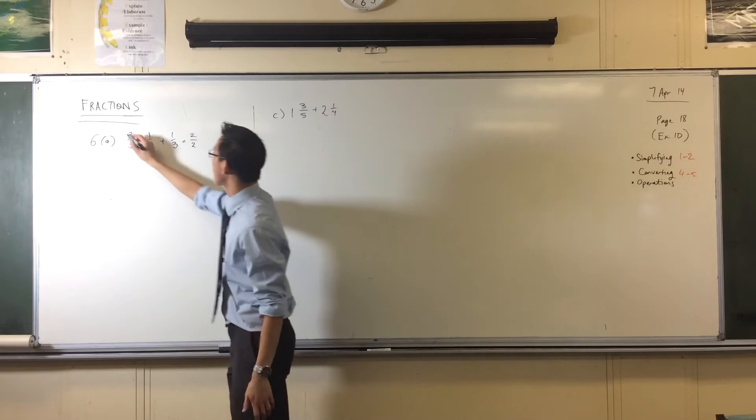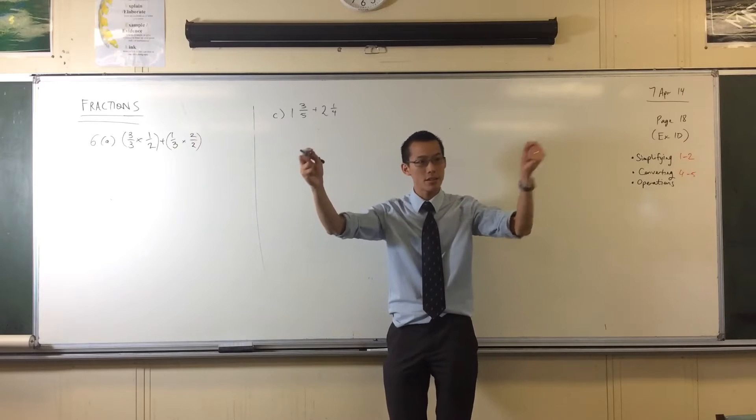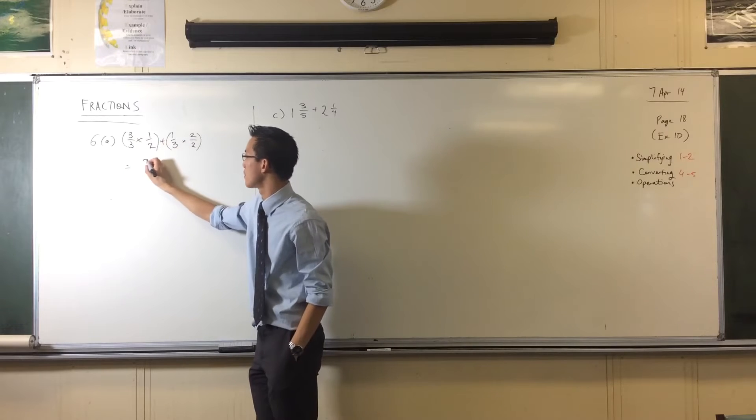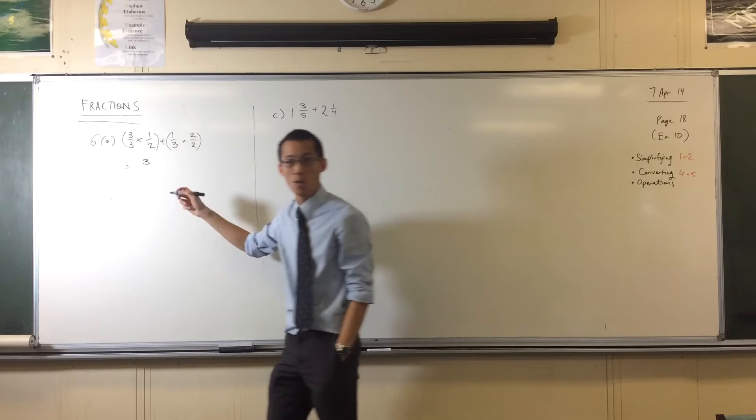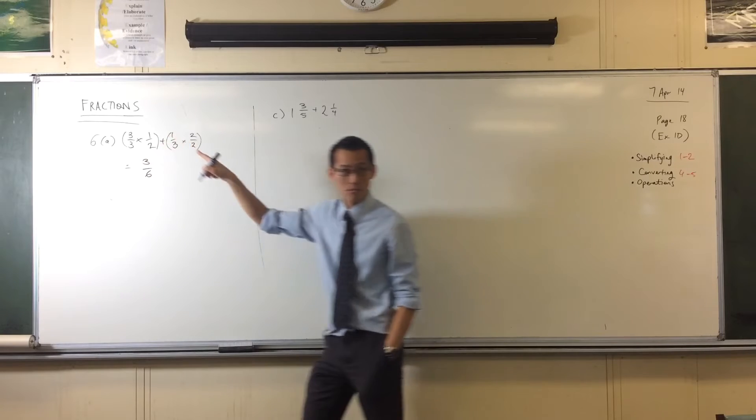Now, when you multiply fractions, how does it work? You just got numerators with numerators and denominators with denominators. So here I'm going to get three times one, which is three, over what? Six. Three times two.